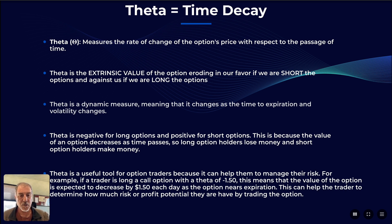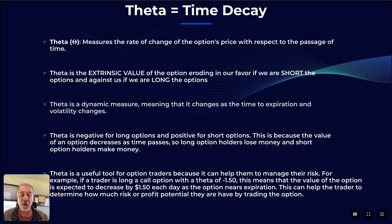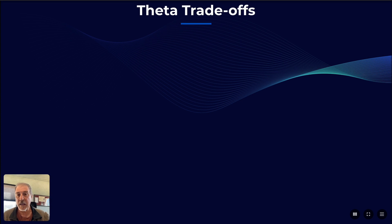Theta is a useful tool for options traders because it helps us understand and manage our risk. As an example, if a trader is long a call option with a Theta of negative $1.50, this means the value of the option is going to decrease by $1.50 each day as that option gets closer and closer to expiration. That amount actually speeds up as you get closer to expiration, but all things being equal, it's basically a measure that shows us how things are going to decay, helping the trader understand how much risk or profit potential they have.